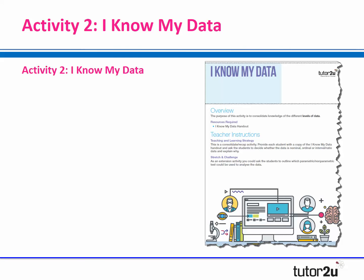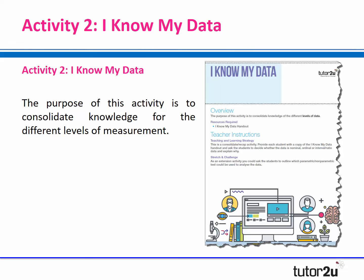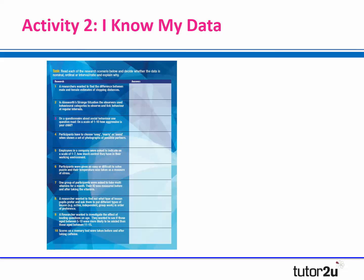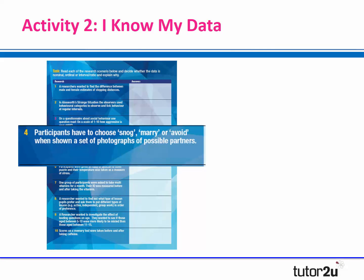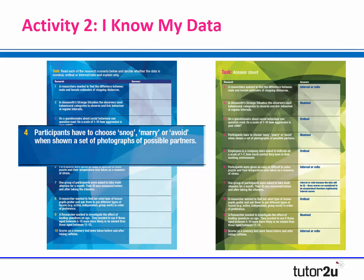That leads quite nicely on, once you've done all the active teaching, to a really simple activity called I Know My Data - a consolidation activity to make sure the students are aware of the different levels of measurement. We've provided you with a handout with 10 different scenarios. For example, scenario four says participants have to choose whether they're going to snog, marry, or avoid a person when shown a set of photographs. Students have to justify which level of measurement it is and why - in this case, they'd say it's nominal because there are three different categories. There's also an answer sheet provided, which makes a nice plenary activity.